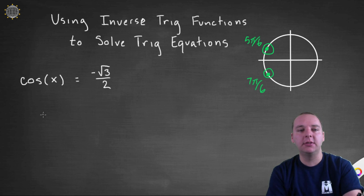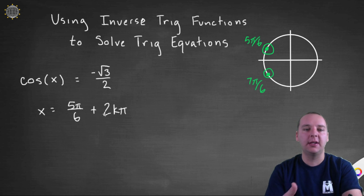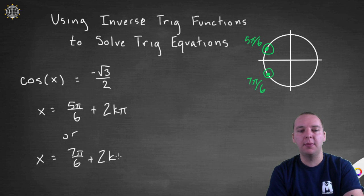So we would get a couple of answers. Either x is 5 pi over 6 plus 2 k pi, any multiple of 2 pi like 2 pi, 4 pi, 6 pi, 8 pi, so we always end up right here, or x equals 7 pi over 6 plus 2 k pi.